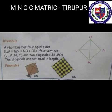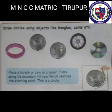Next: Rhombus. A rhombus has four equal sides, four vertices L, M, N, O, and two diagonals LN and MO. The diagonals are not equal in length. Examples: kite and tile.